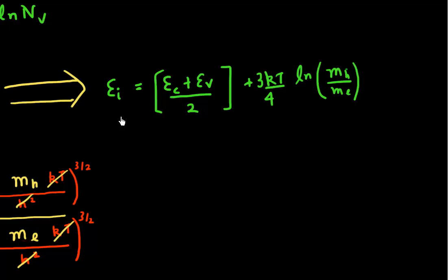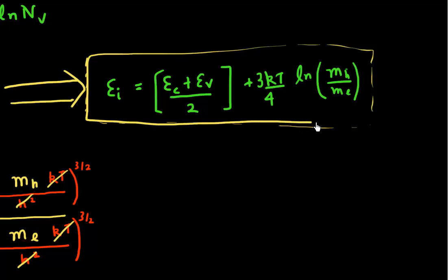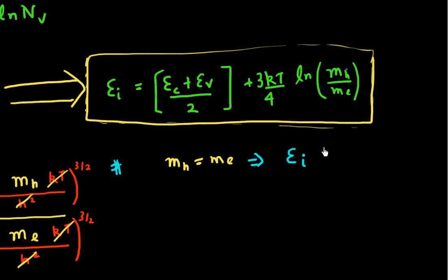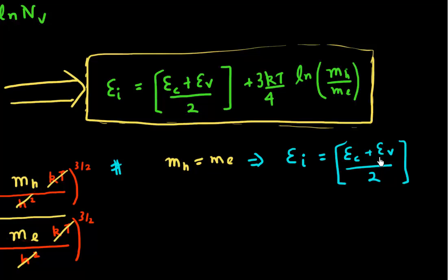This is the formula for the Fermi level location inside an intrinsic semiconductor. Now, if electrons and holes have the same effective mass — mh* equals me* — as in a hypothetical semiconductor, then ln(1) = 0, the correction term vanishes, and the intrinsic Fermi energy is located exactly at the mid-band gap.